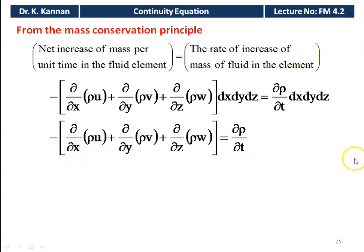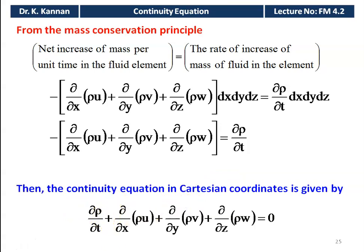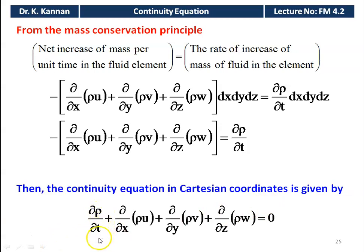The continuity equation in the Cartesian coordinate system is: ∂rho/∂t + ∂(rho U)/∂x + ∂(rho V)/∂y + ∂(rho W)/∂z = 0. This is the general expression for three-dimensional compressible flow in Cartesian coordinates. It accounts for change in density with respect to time and velocity components in all three directions.